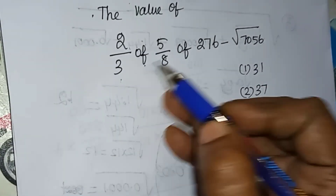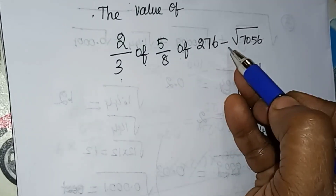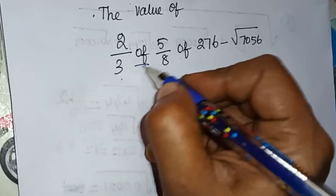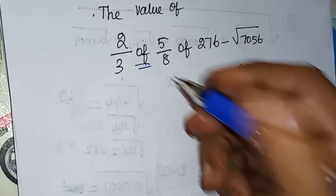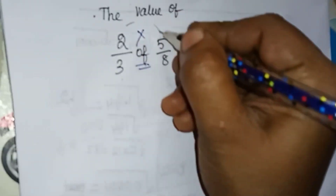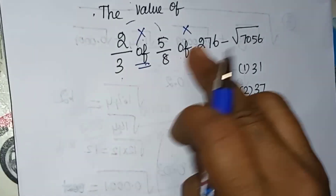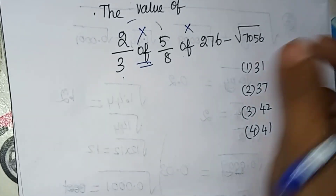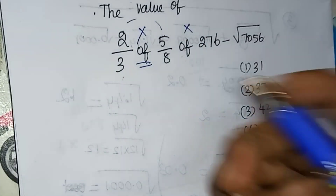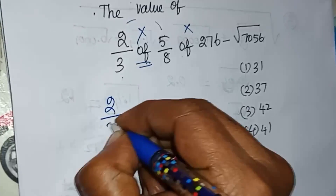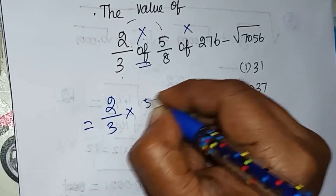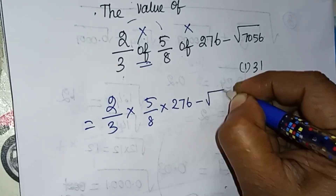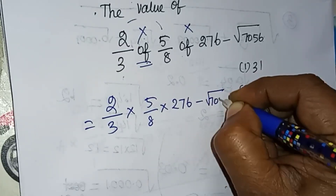2 by 3 of 5 by 8 of 225 minus root of 7 is equal to 99. First, we need to multiply the number, then we need to do a division. 2 by 3 into 5 by 8 into 276 minus root of 7 is equal to 56.